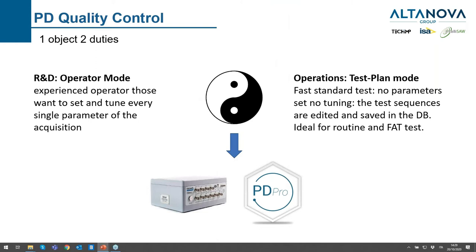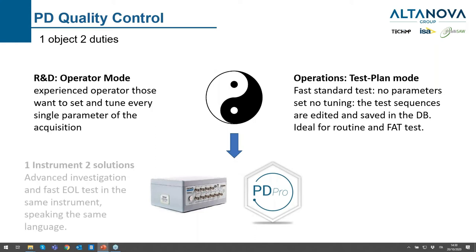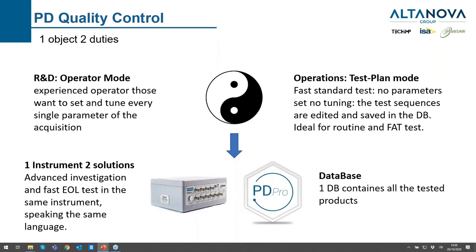The PD Pro is the software that basically collects all different software for partial discharge and has different operation modes. In operator mode, R&D people have full control of all the units. In test plan mode, I can prepare some test plans and repeat them on different assets of the same type, applying the same rules and saving the data in the database — one instrument, one solution.